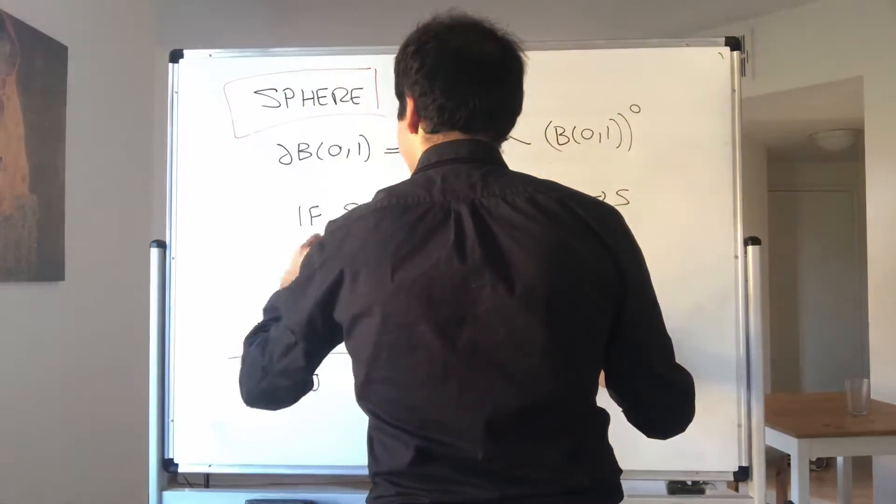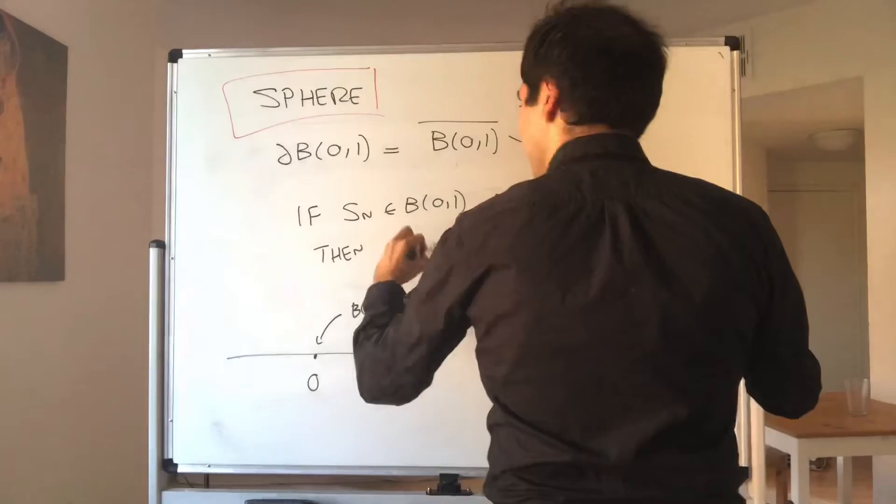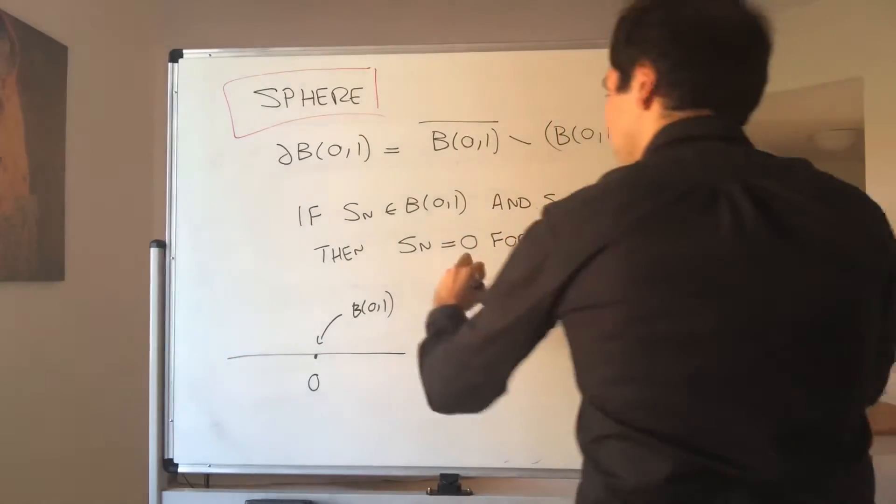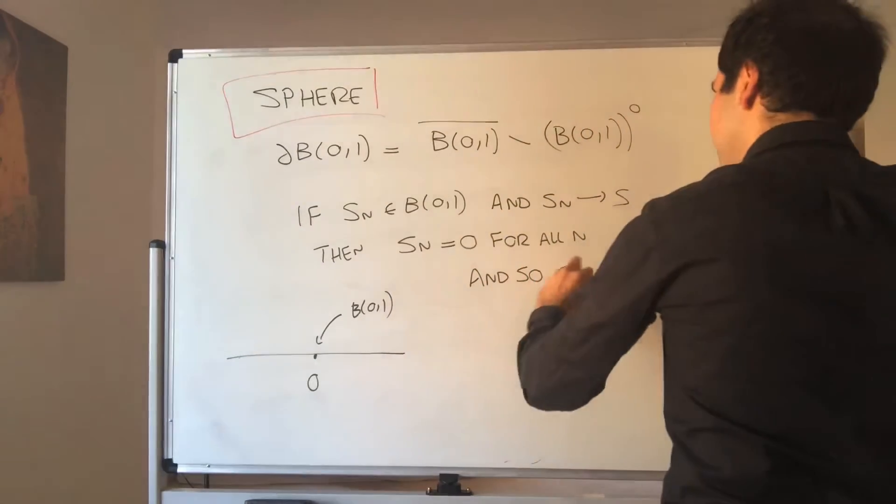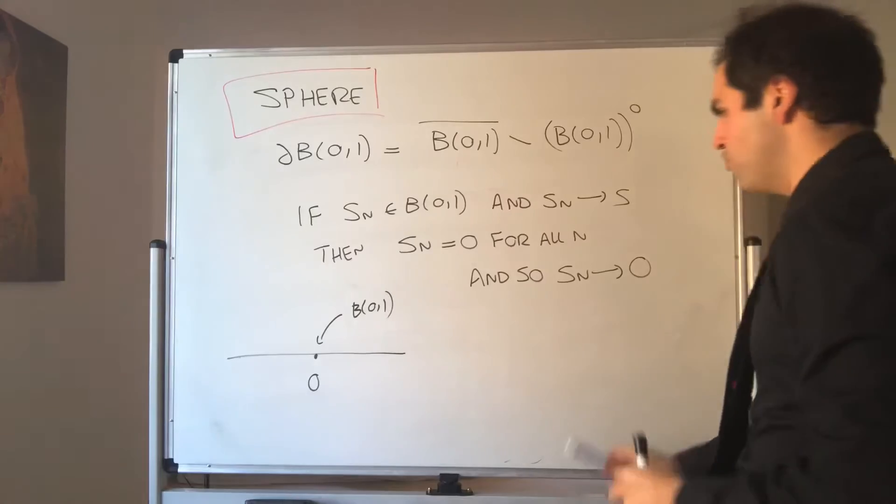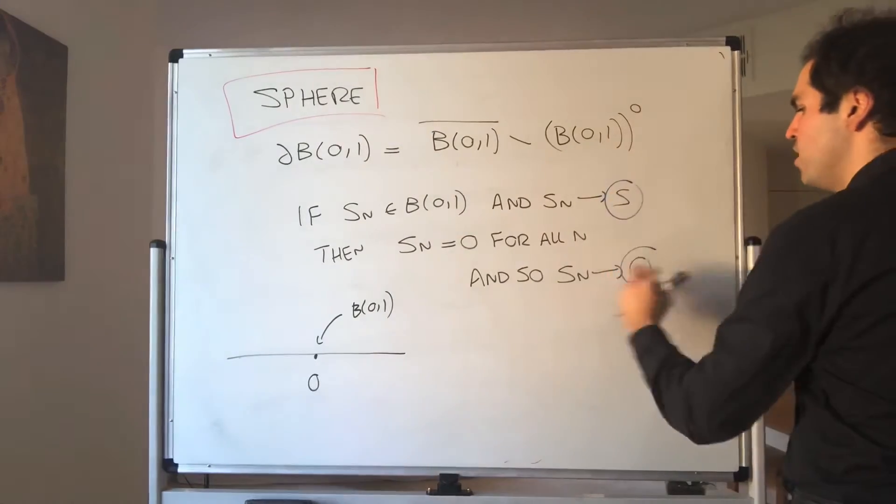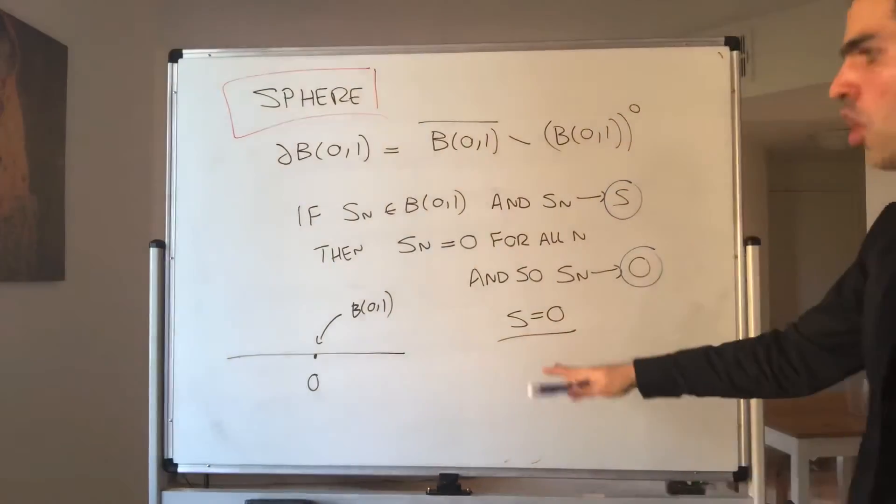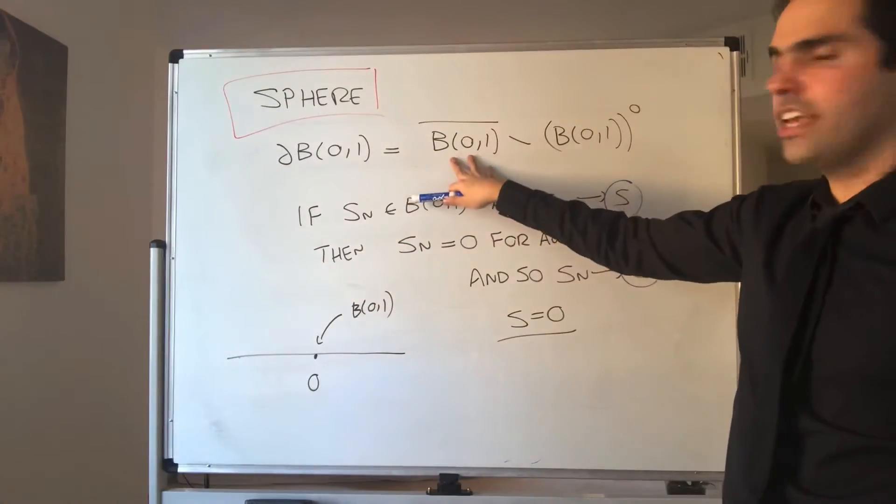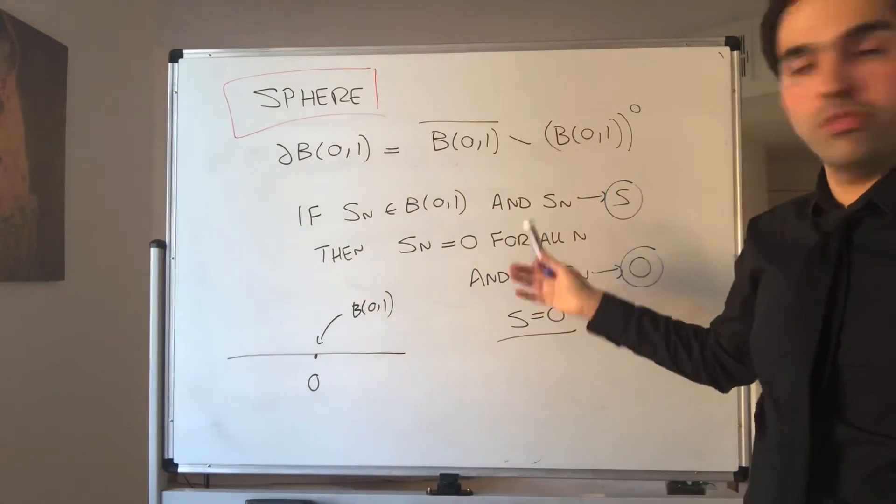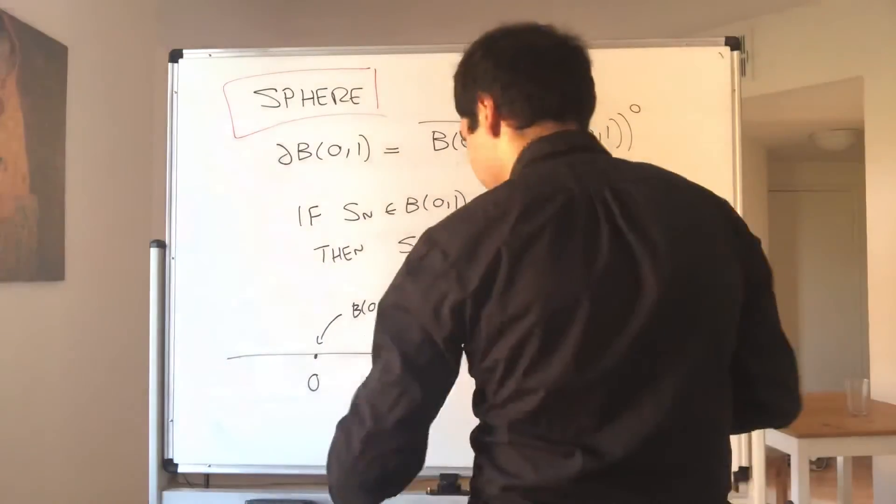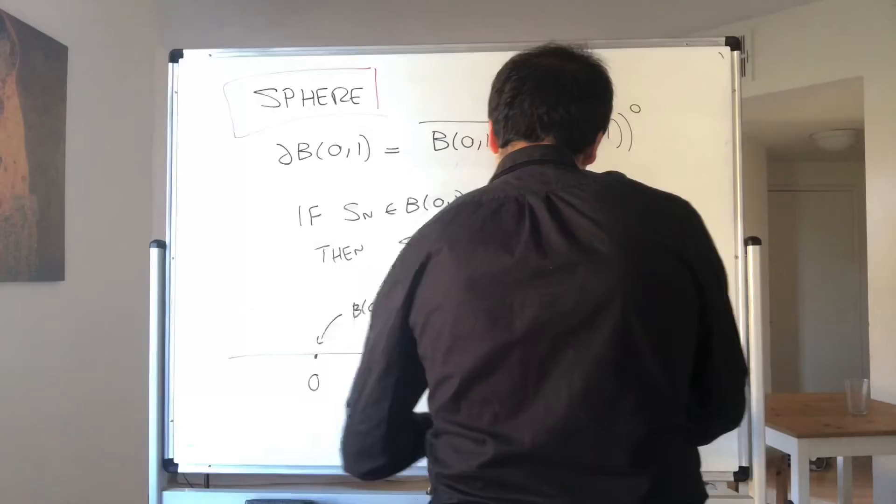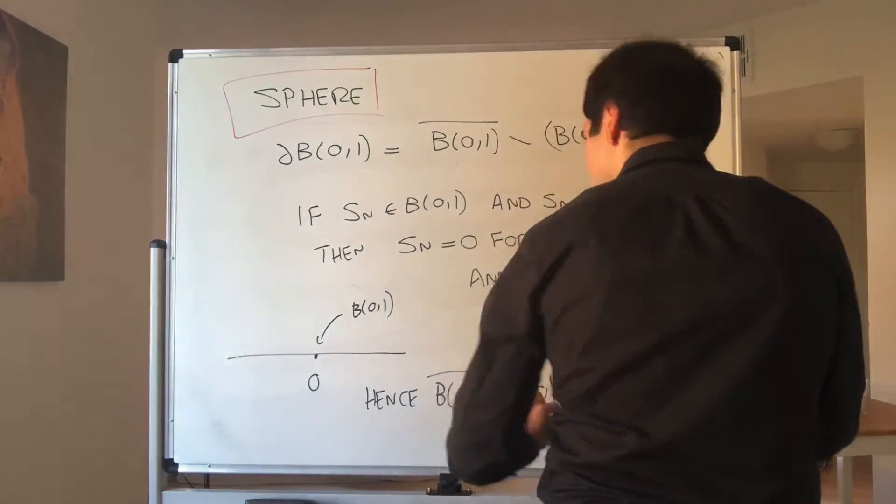So if S_n is in B(0,1) and S_n converges to S, then the only way you can be in this ball is if S_n equals zero for all n, and so that sequence has to converge to zero, and therefore, by uniqueness of limits, we get S equals zero. Which just shows that the set of all limit points in that ball is just the zero set. So hence, the closure of B(0,1) is just zero.